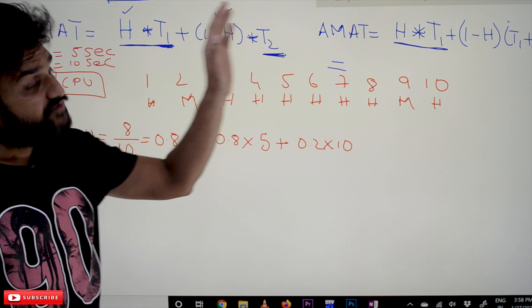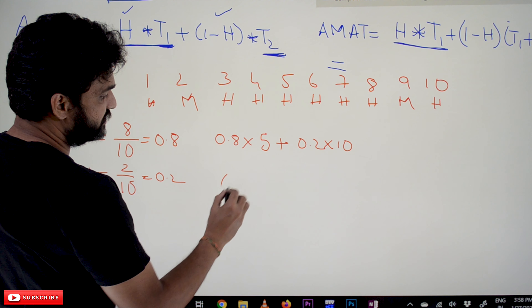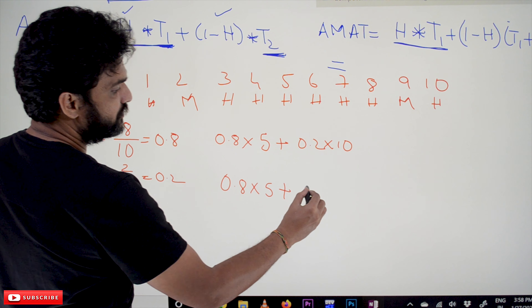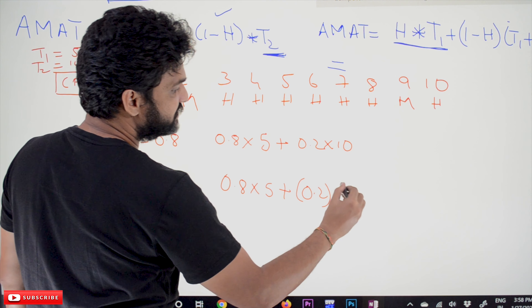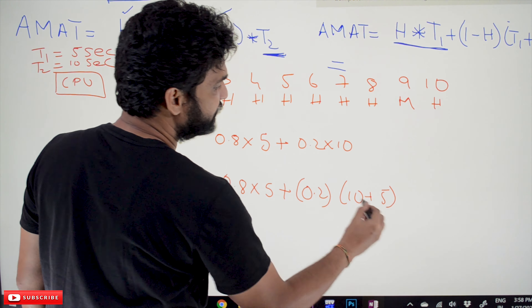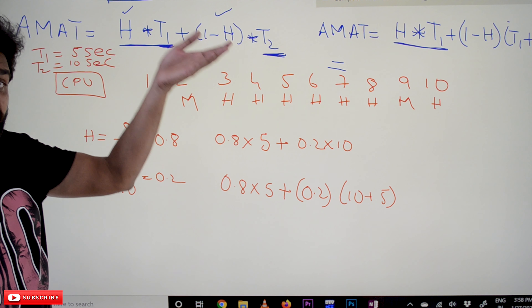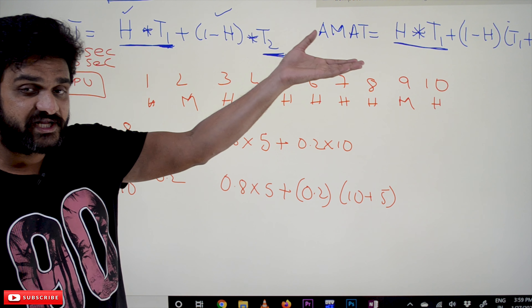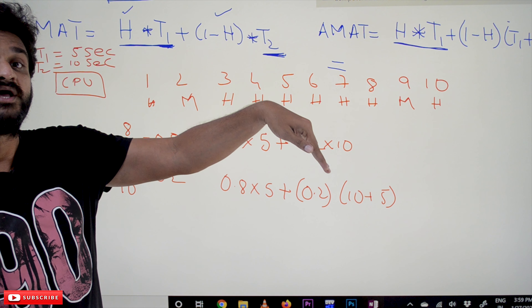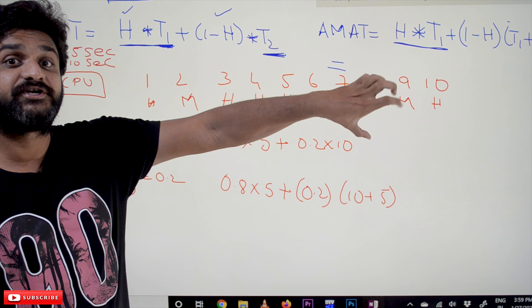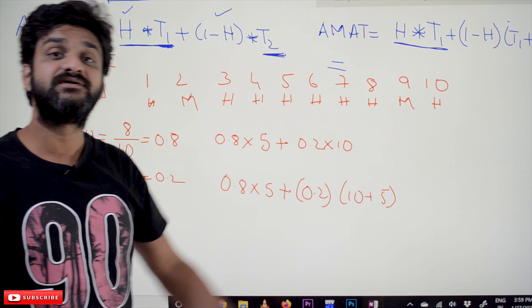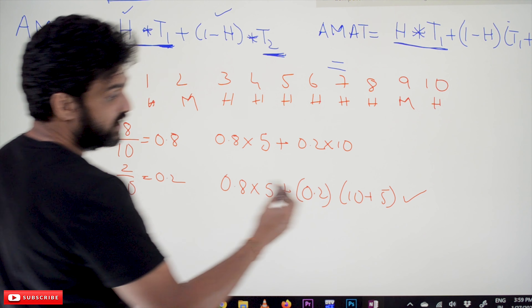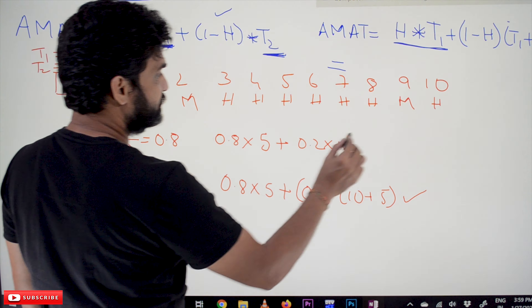For hierarchical organization with the same values: AMT = 0.8 × 5 + 0.2 × (10 + 5). The miss term uses T1 + T2 because in hierarchical access, we first spend T1 accessing Memory 1, and then spend T2 accessing Memory 2, so both times are accumulated for a miss.